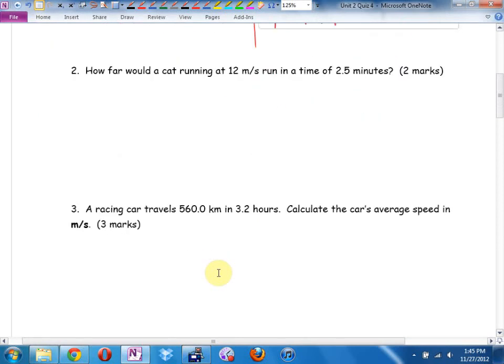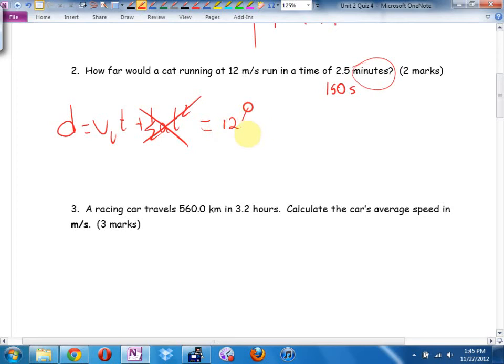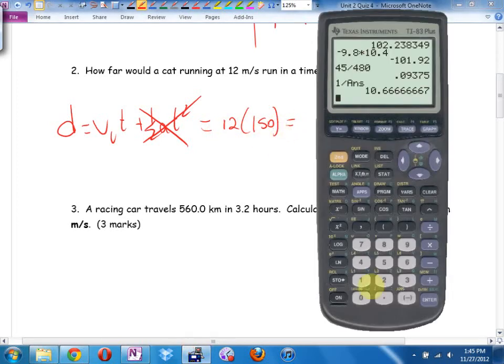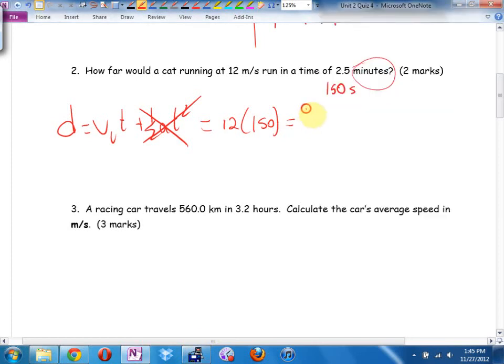How far would a cat running at 12 meters per second run in a time of 2.5 minutes? Nice try. Not going to get me with the minutes. Two and a half minutes. Well, I know two minutes is 120 seconds, half a minute is 30 seconds. So I'm pretty sure there's 150 seconds. They want a distance. Have they mentioned an acceleration here at all? Then I'm going to use D equals VIT plus a half AT squared. But the acceleration is zero. It's going to be 12 times 150 seconds: 1800 meters. Now, the physics here is good. I looked at this and went, you're telling me this cat ran just about two kilometers straight without stopping at 12 meters a second? That's a very scared cat.